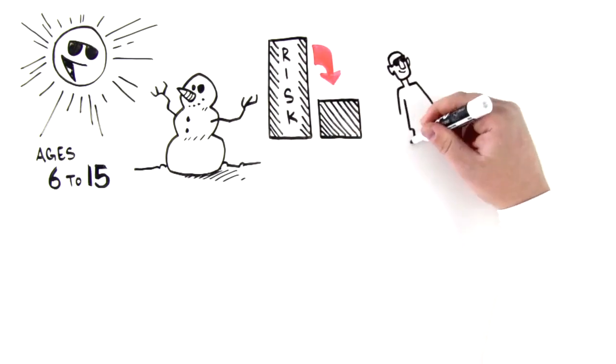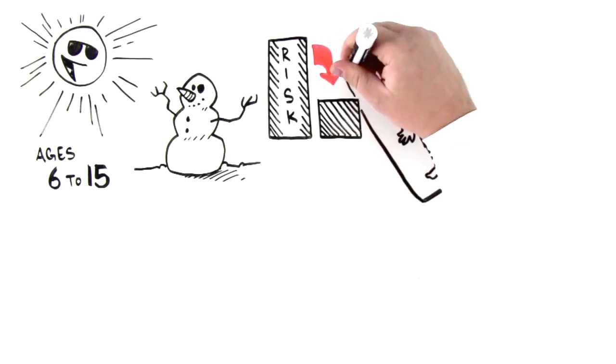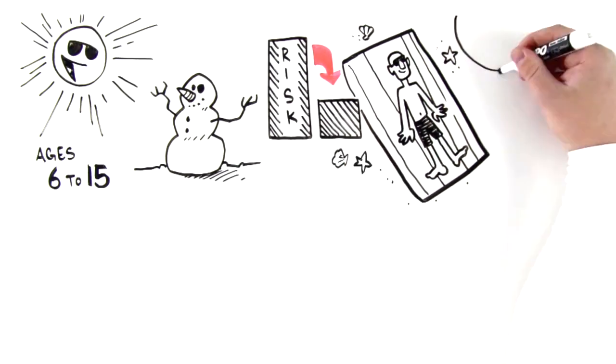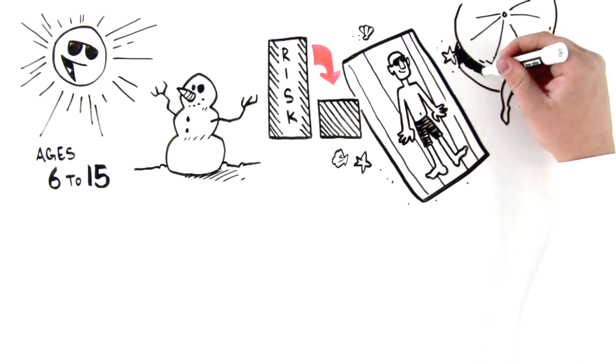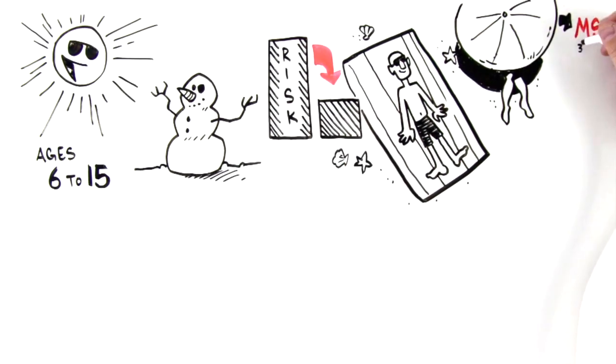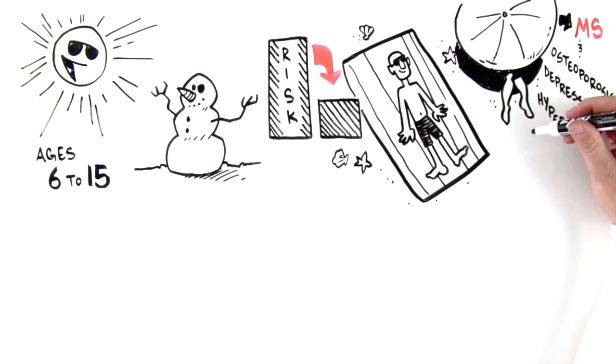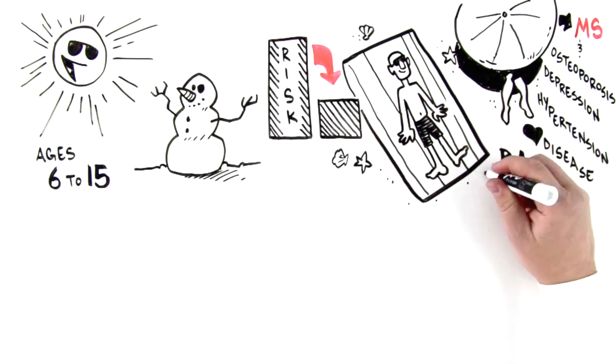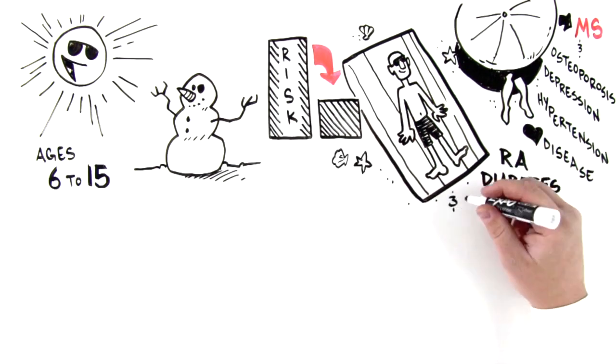Sun exposure is essential for health, and sun avoidance is causing an epidemic of vitamin D deficiency, contributing not only to MS, but conditions such as osteoporosis, depression, hypertension, cardiovascular disease, rheumatoid arthritis, diabetes, and some cancers.